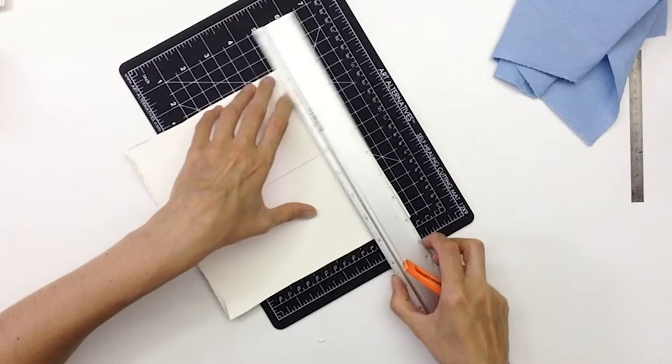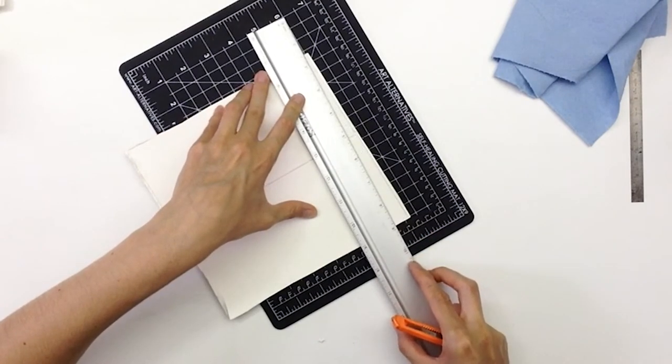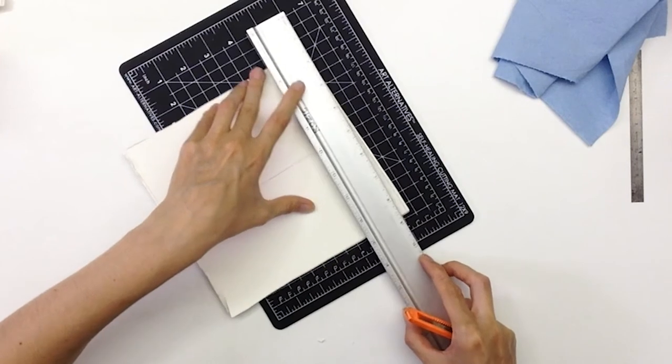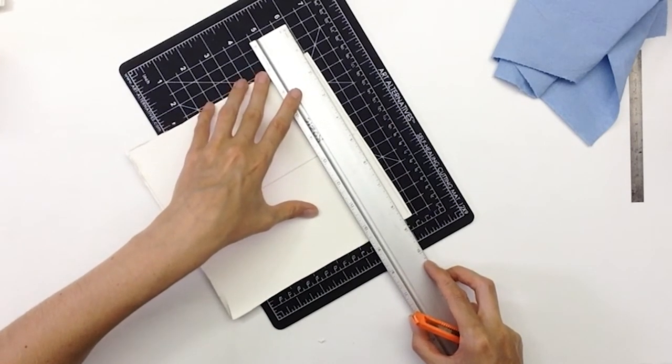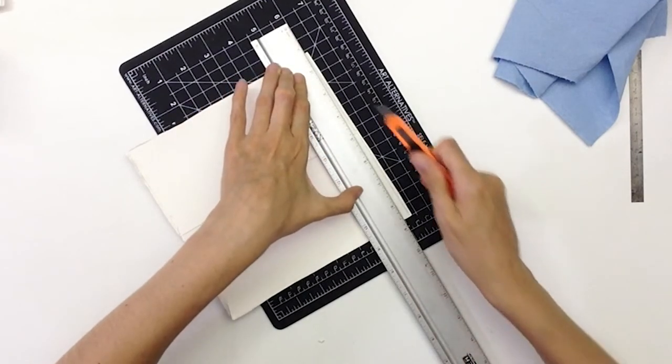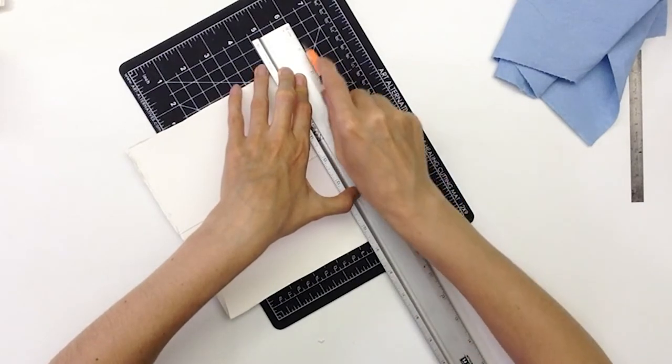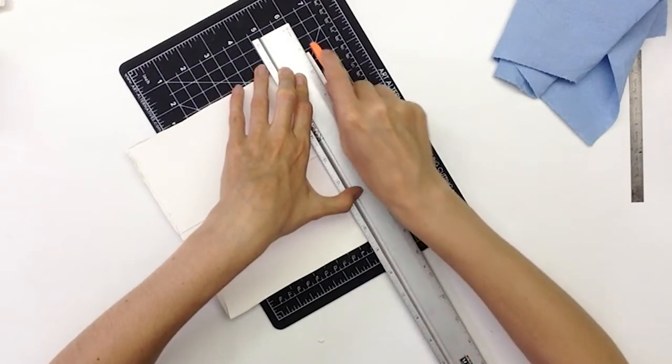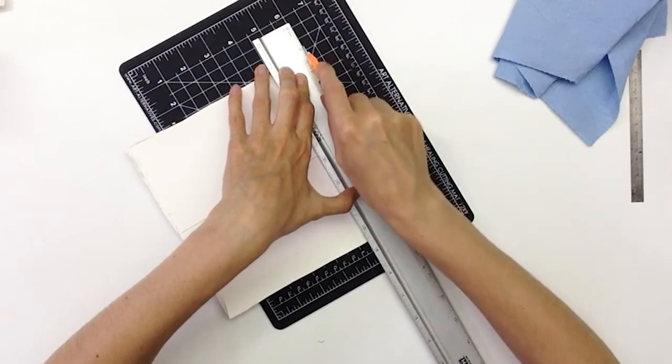Similar to cutting paper or the PETG plates, I'm going to align the material up using the straight edges that are on the cutting mat, and score the material several times, rather than trying to push through the material all at once.